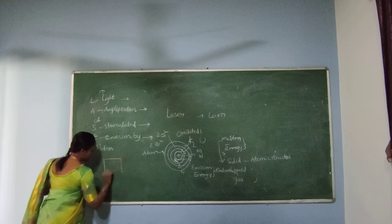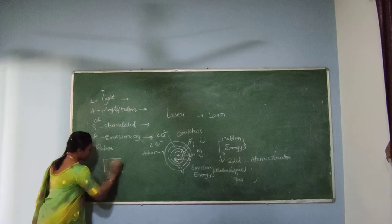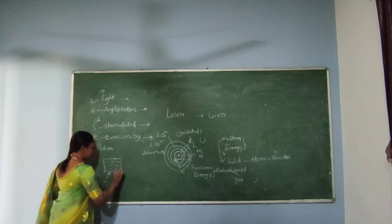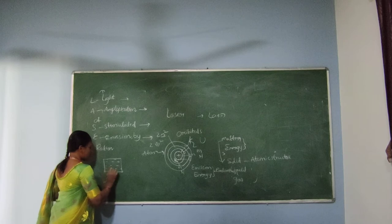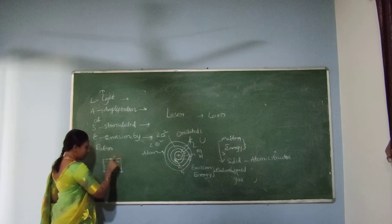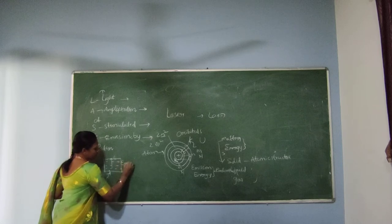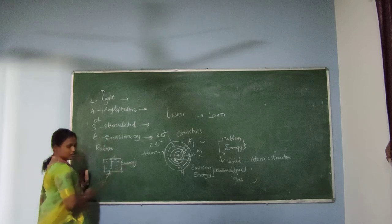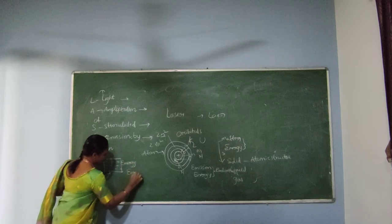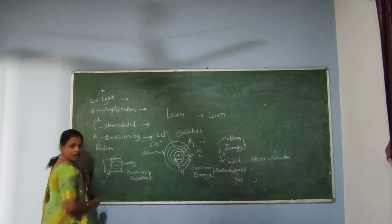Consider one solid material — supply external energy. That solid material consists of atoms; atoms absorb the external energy. It will move, or transition, from the ground state to the excited state. Same process — there is no long time in excited state. Excited atoms will move to downward transition, then emit the energy. This process of absorption and emission is called radiation.